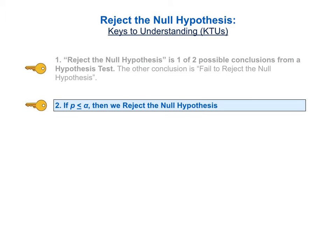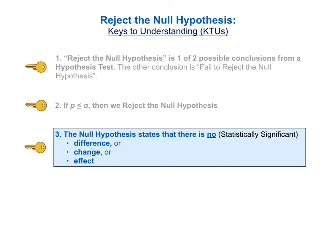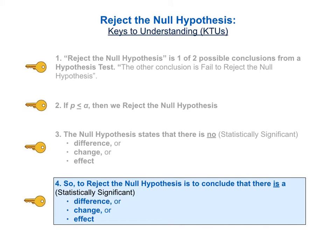Key to understanding number two states that if P is less than or equal to alpha, then we reject the null hypothesis. Key to understanding number three: the null hypothesis states that there is no statistically significant difference, change, or effect. KTU number four: to reject the null hypothesis is to conclude that there is a statistically significant difference, change, or effect.